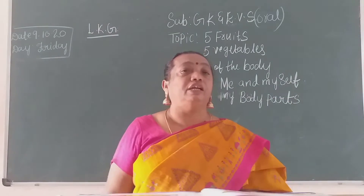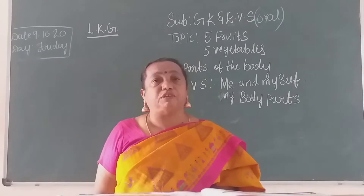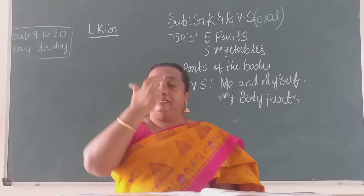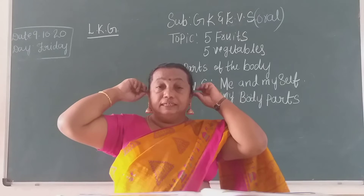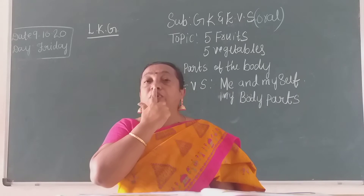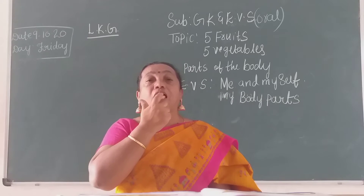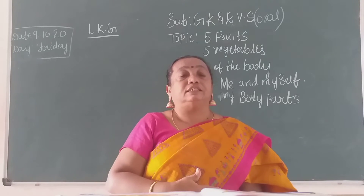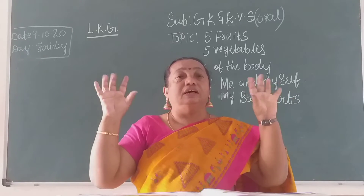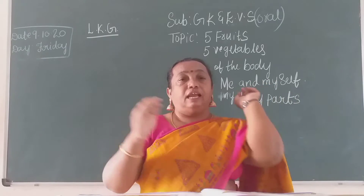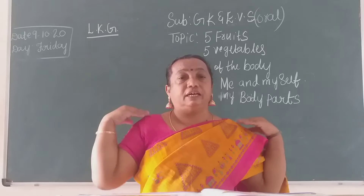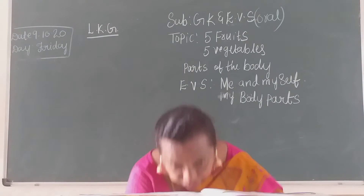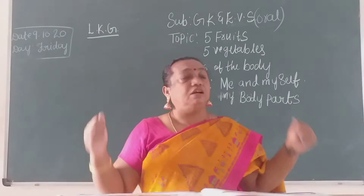What is this children? Parts of the body. Say children. Parts of the body: head, hair, forehead, eyes, ears, nose, mouth, teeth, tongue, neck, chest, stomach, hands, fingers, elbow, shoulders, stomach, legs, thigh, knees and toes. What is this? Parts of the body.